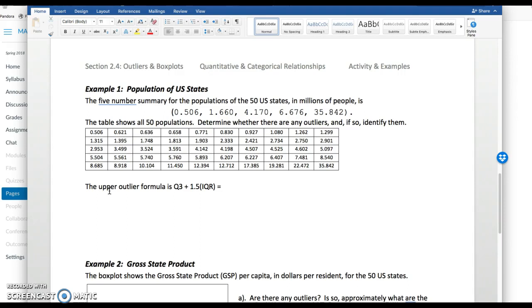The upper outlier formula is Q3 plus 1.5 times the interquartile range IQR. For this particular data set, we're given the five number summary. So this is Q1, Q2, the median population 4.17 million, Q3, 75th percentile, and the max. Using the five number summary, I'm going to plug in Q3, 6.676 plus 1.5 times the interquartile range, and that's Q3 minus Q1. So that's 6.676 minus Q1, 1.66. Throw this in your calculator, and I got about 14.2 million.